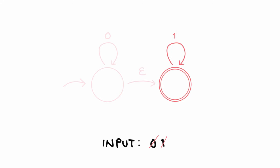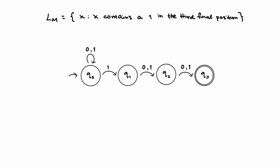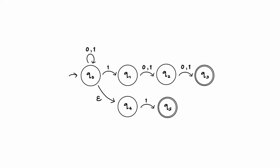So going back to our first NFA that accepts all strings containing a 1 in the third final position, let's add these two new states with an empty transition. The NFA now accepts all strings containing a 1 in the third final position, or it also accepts the single 1.